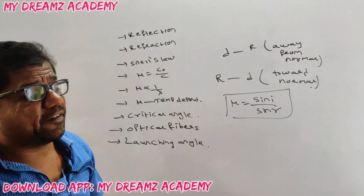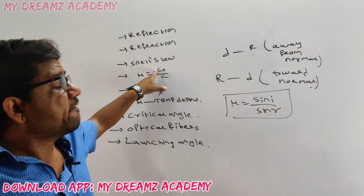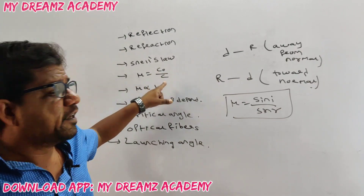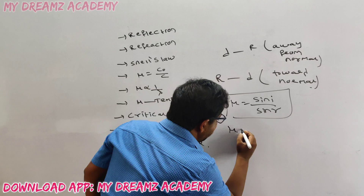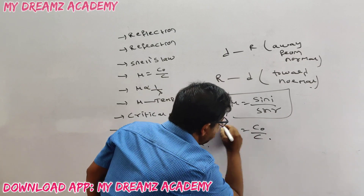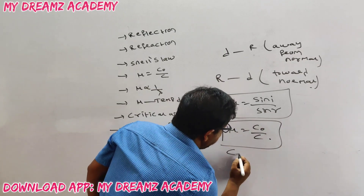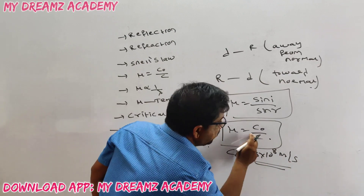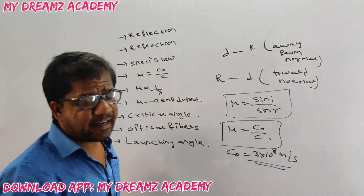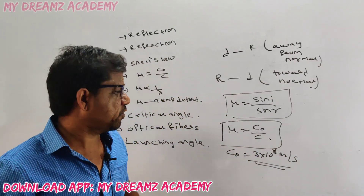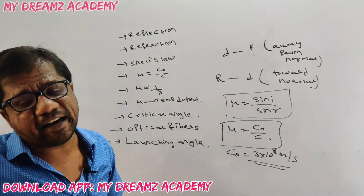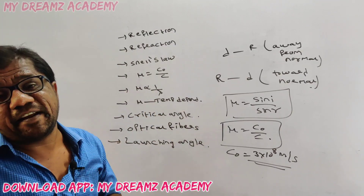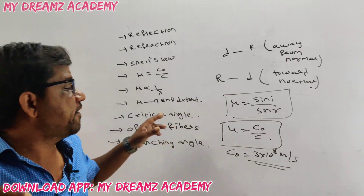The definition of refractive index: it is the ratio of the velocity of light in air to the velocity of light in the medium. The speed of light in air is 3 × 10⁸ meters per second. For materials like diamond, glass, and water, we can calculate the refractive index of the medium. Note that refractive index depends on wavelength.